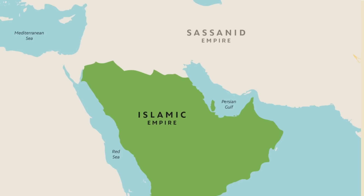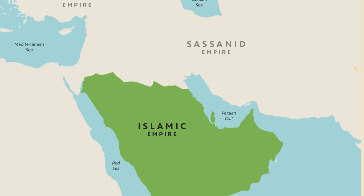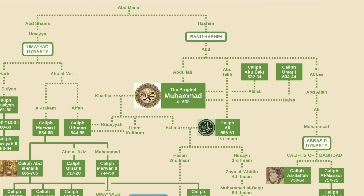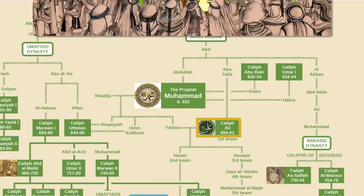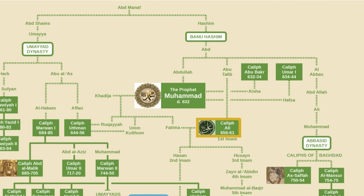According to the Sunnis, Muhammad left no designated successor. Since he didn't have any sons that survived early childhood, there was a succession crisis. In the chaos after his death, his close friend and father-in-law, Abu Bakr, was chosen as caliph — a word that literally just means successor. Ali, the Prophet's closest living male relative, was completely sidelined. You can see here that he was a cousin of the Prophet and also married to Fatima, the Prophet's daughter. Many Muslims at the time believed that Ali deserved the caliphate. According to Shias, Muhammad had actually declared Ali to be his political successor, but Sunnis dispute this.